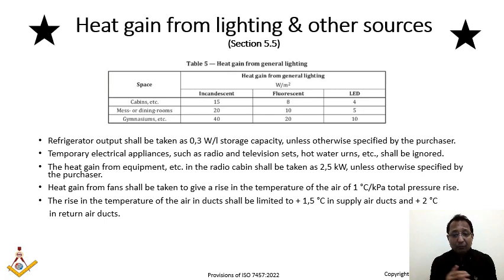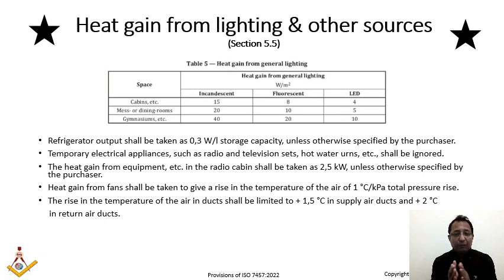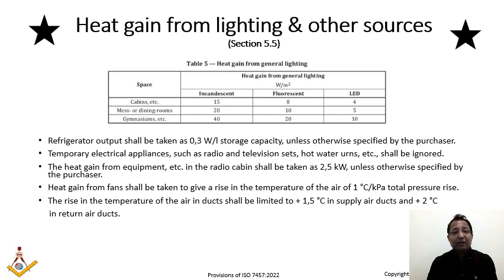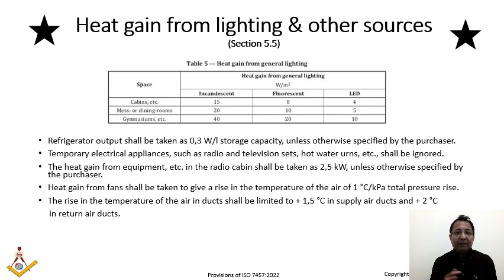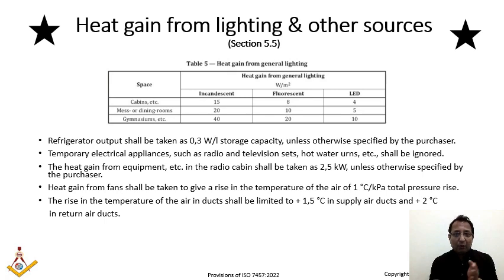The temperature rise limit is 1.5°C in supply ducts and 2.0°C in return air ducts. The apparatus dew point and supply temperature from heat load calculations — typically around 14°C — must account for this duct heat gain. When 14°C supply air enters a room maintained at 24°C, heat is picked up and returned to the duct. The coil must be sized to accommodate this delta T and match the required room conditions.